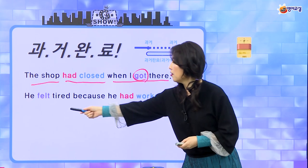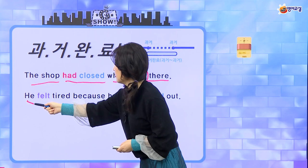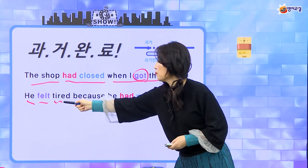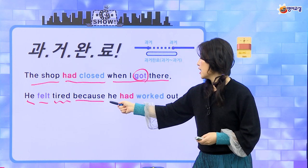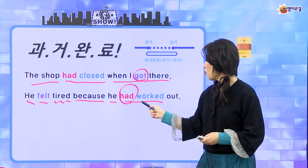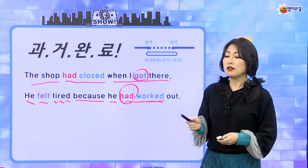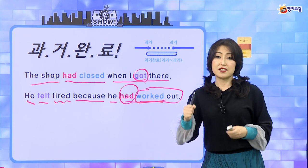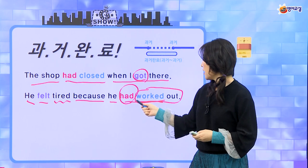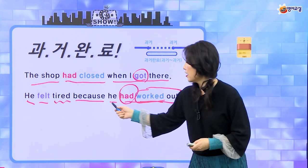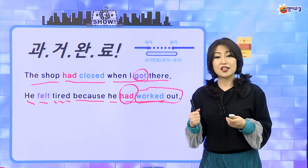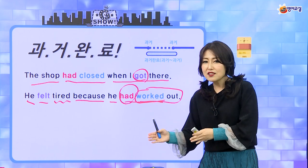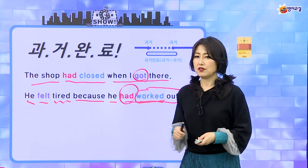다음 문장: 'He felt tired because he had worked out.' 그는 felt — feel의 과거 — 피곤함을 느꼈어. 왜냐하면 he had worked out, had랑 worked out해서 PP예요. work out은 운동을 하다라는 얘기예요. 그는 운동을 했기 때문에 피곤을 느꼈어. 피곤을 느낀 것보다 운동을 한 게 먼저이기 때문에 이 순서로 쓰면 돼요.